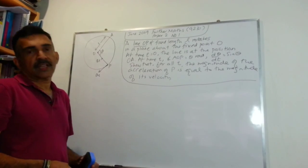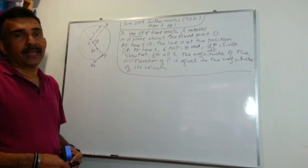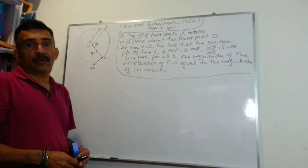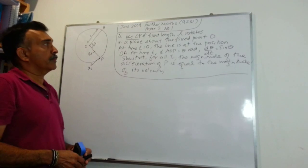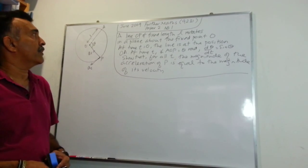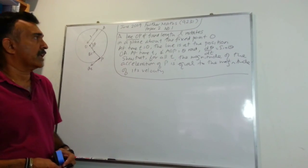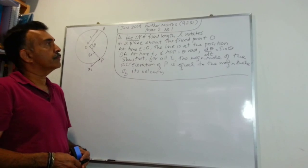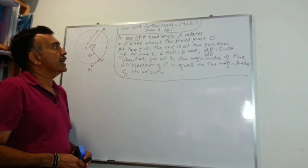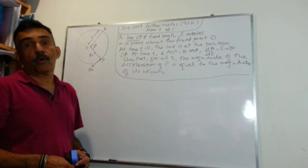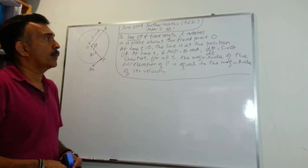Let's discuss it and talk about the main ideas and how we go about solving the problem. We have a line OP of fixed length L. It rotates in a plane about the fixed point O.